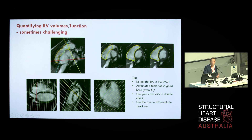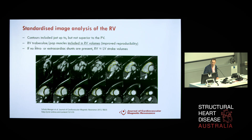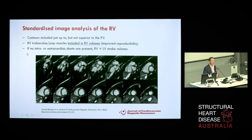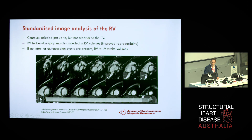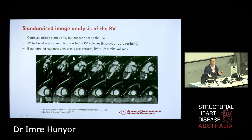This is critical in cases such as surgical planning and timing of intervention for patients with repaired tetralogy of Fallot where you're serially monitoring RV size and function. The convention is to include contours up to but not superior to the pulmonary valve, and trabeculae and papillary muscles are included in RV volumes for improved reproducibility. Assuming no intra- or extracardiac shunts, the right and left ventricular stroke volumes calculated from contours should be roughly equal, with minor differences due to bronchial arterial supply.